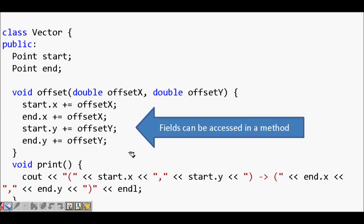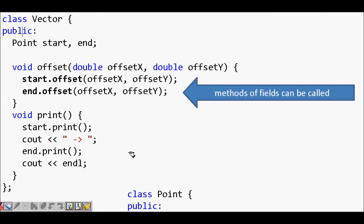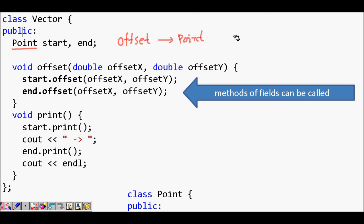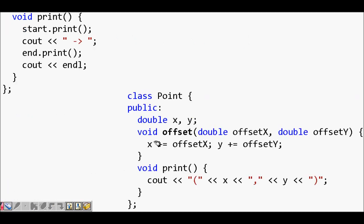Once defined inside the class, if you create vec1, you can call vec1.offset(x, y) and vec1.print() using the dot operator. This shows that these are member functions of class Vector. Now, since offset is ultimately modifying the Point class — incrementing X and Y coordinates — when writing good object-oriented C++ code, it makes sense to move the offset method into class Point itself.